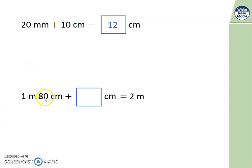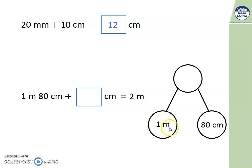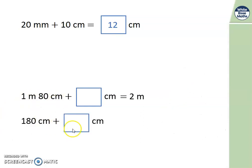Let's try this one. 1 metre and 80 centimetres add how many centimetres to get to 2 metres? Well, I know that 2 metres is the same as 200 centimetres because 1 metre, this 1 metre is 100 centimetres. Add the 80 makes 180 centimetres and that's what this is. So 180 centimetres adds some more centimetres and I know 2 metres is 200 centimetres. What would I add to 180 to get to 200? It's 20, so the answer here is 20 centimetres.